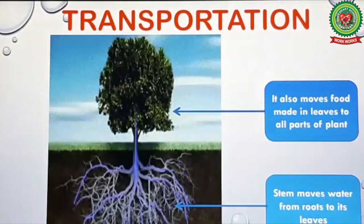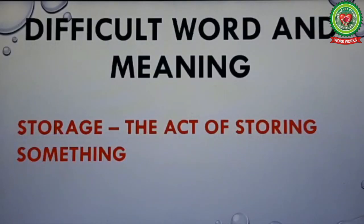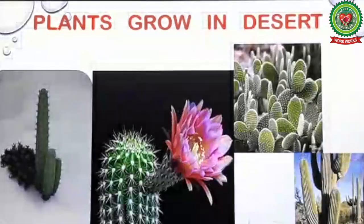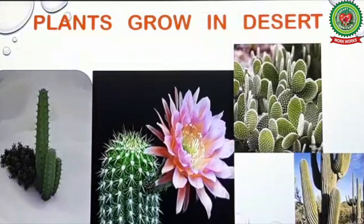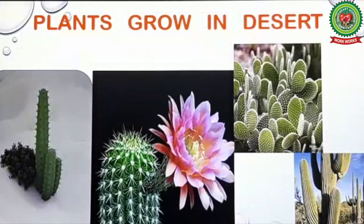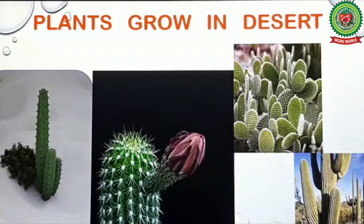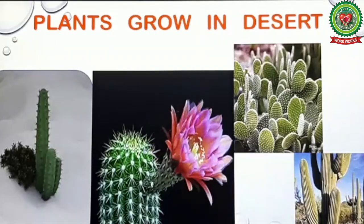Third point: storage. Underline 'storage' and write its meaning: the act of storing something. Some plants store food and water in their stems. Cacti and some other desert plants store water in their stems. Deserts receive very little rainfall, so these areas have very little underground water. Plants like cactus, palm, and acacia that grow in desert areas store water in their stems.